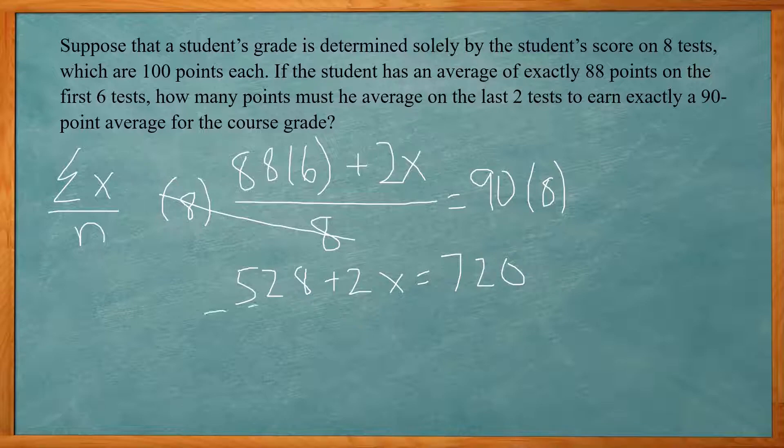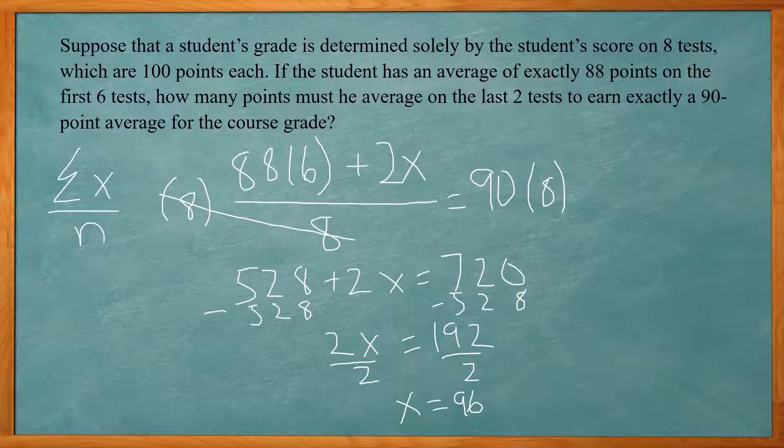I can subtract 528 from both sides. That leaves me 2x equal to 192. And divide both sides by 2. And x equals 96. So they need to average 96 points on the last two tests in order to get a 90 for the class.